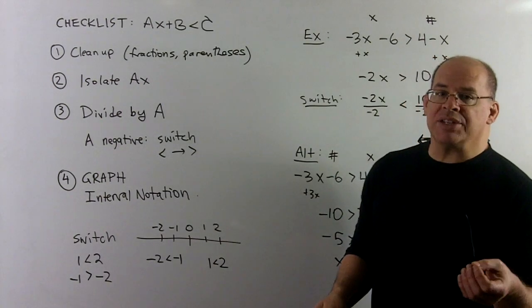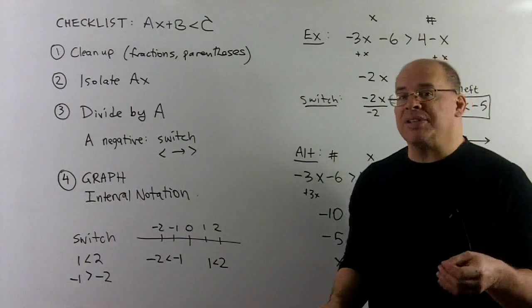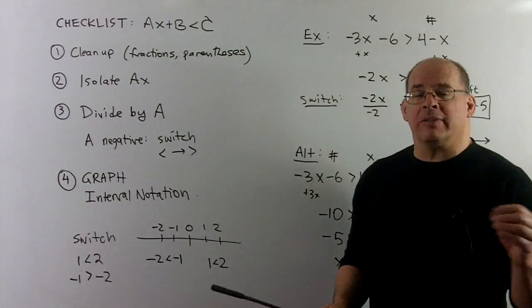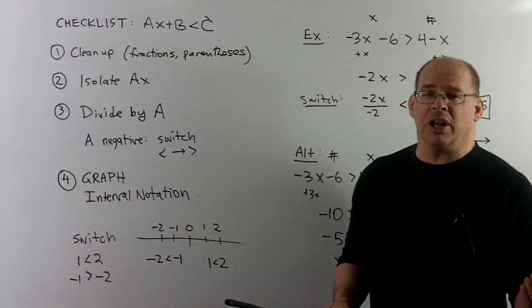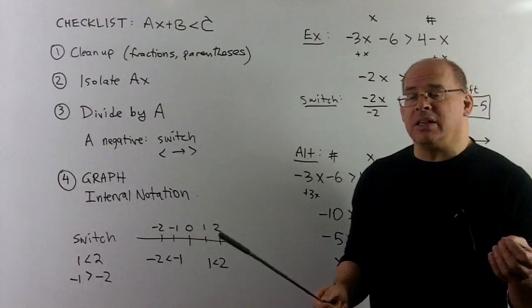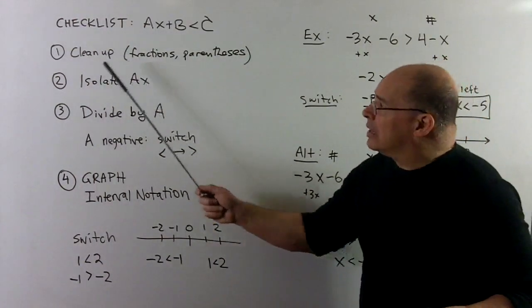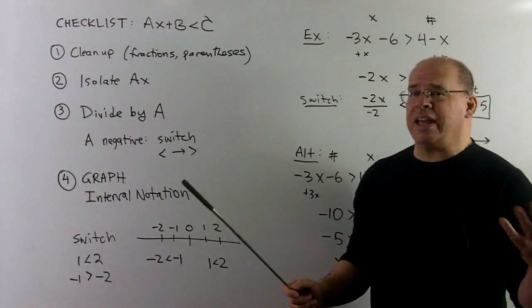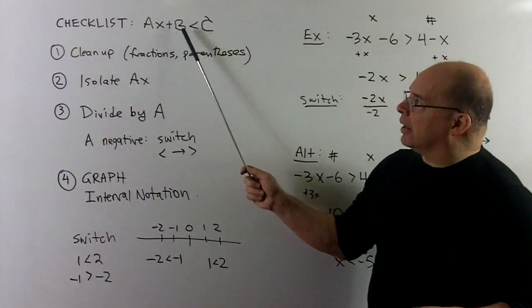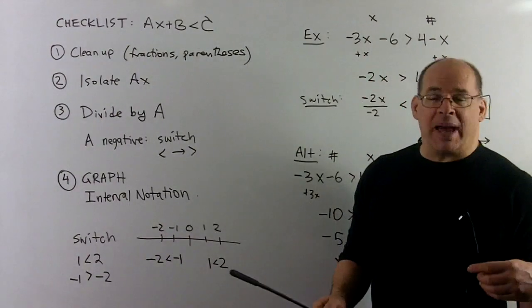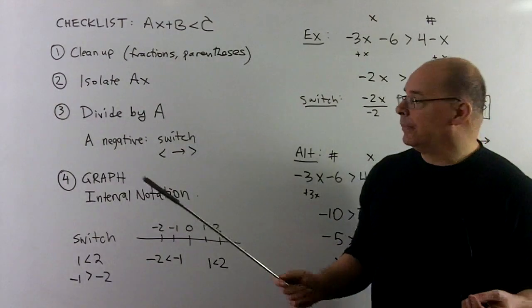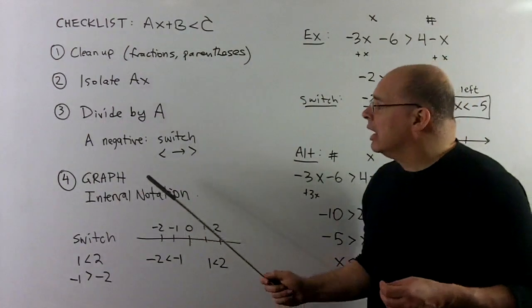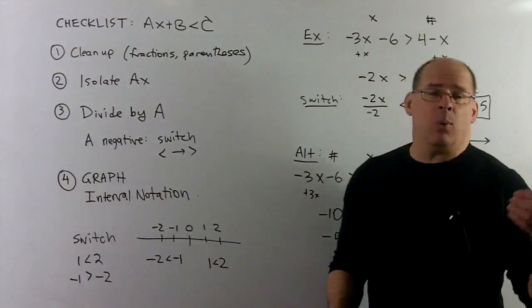The inequalities we're solving look like ax + b less than c. The process is exactly like linear equalities, except if at any point we multiply or divide by a negative number, we have to change the direction of the inequality. The steps: clean up the equation, clear fractions, clear denominators, distribute to remove parentheses, get all x terms in one place to isolate the ax, move b over, then divide both sides by a. If a is negative, switch the direction of the inequality. Then draw the graph and convert to interval notation.